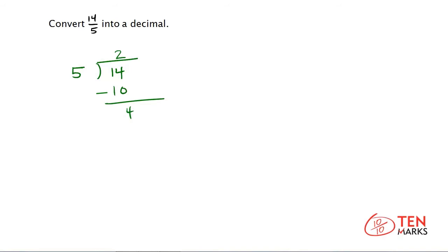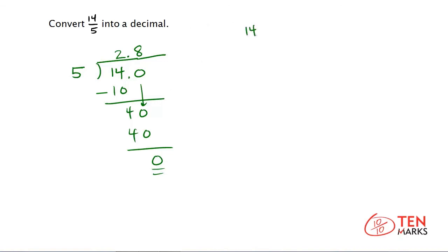5 does not go into 4 because 4 is smaller, so you need to put a decimal point here and above, then include some zeros. Bring this zero down and ask how many times does 5 go into 40. Well, 5 times 8 is 40, so put that up there. 5 times 8 is 40, and you do the subtraction to get a remainder of zero, so you're done with the division. That means the fraction 14 fifths can be expressed as the decimal 2.8.